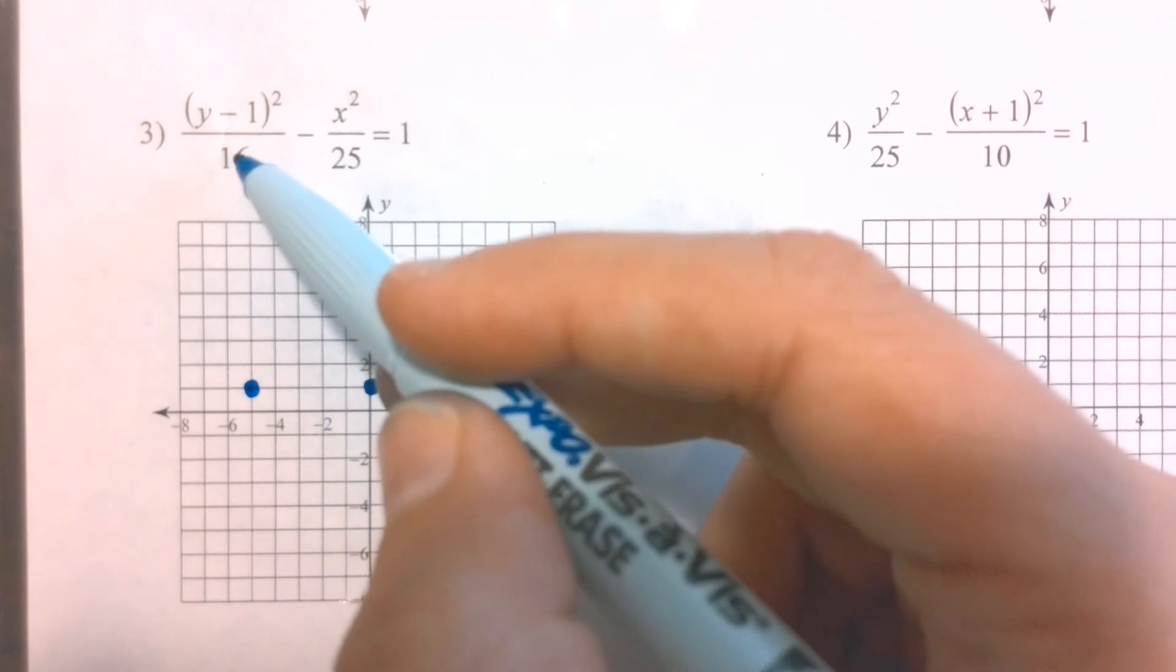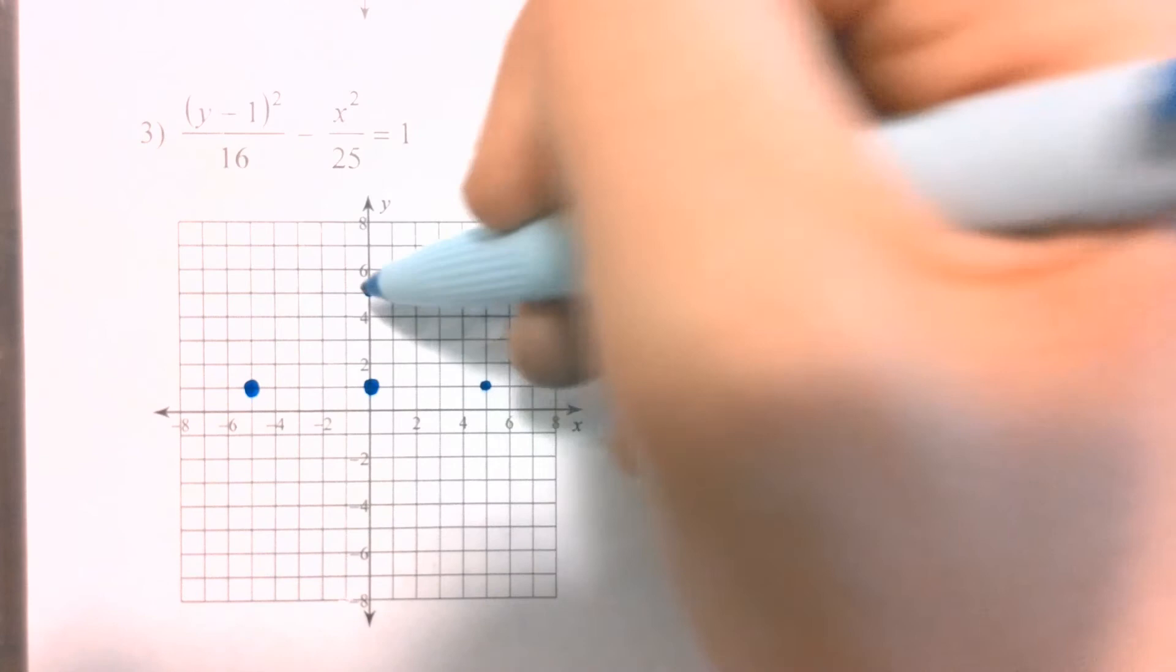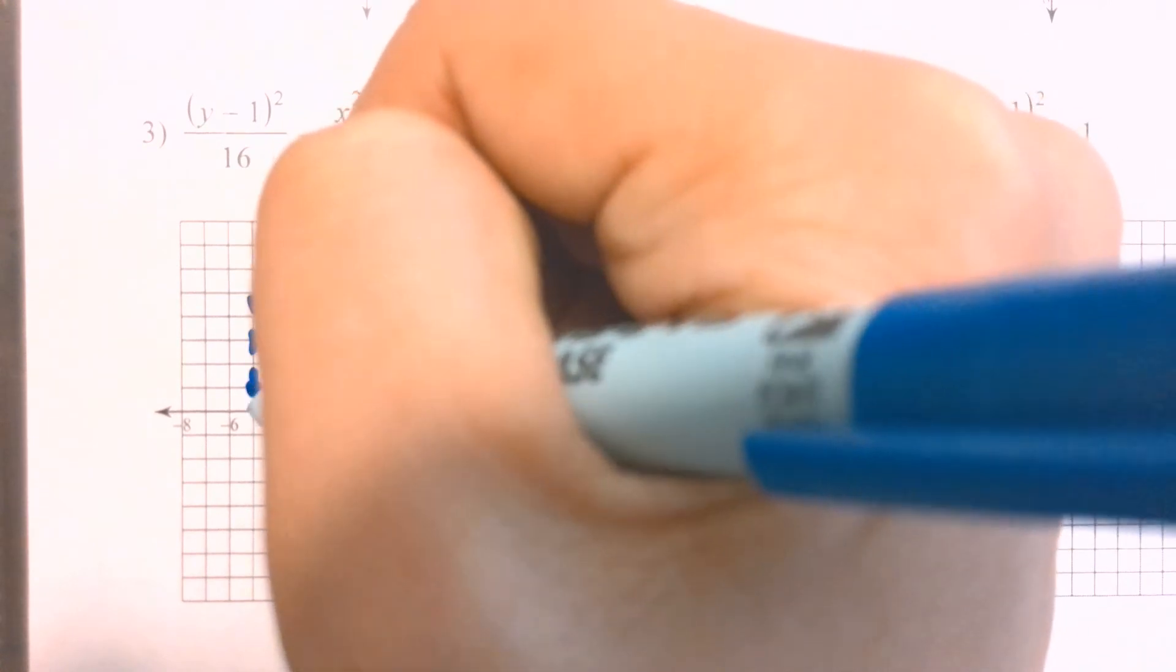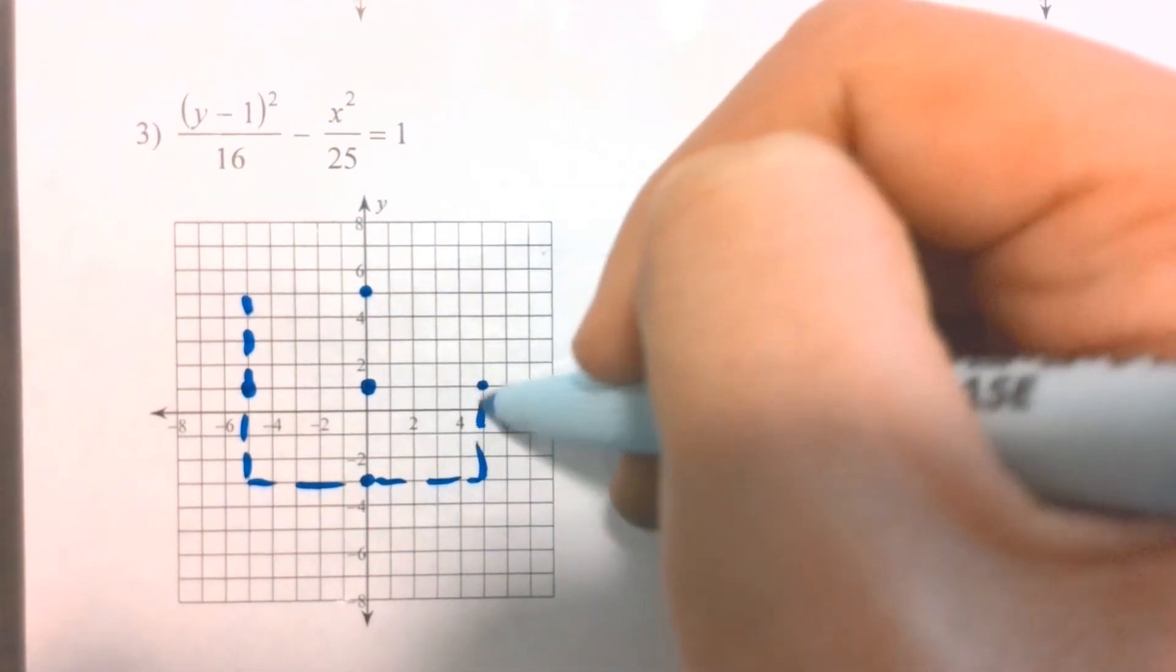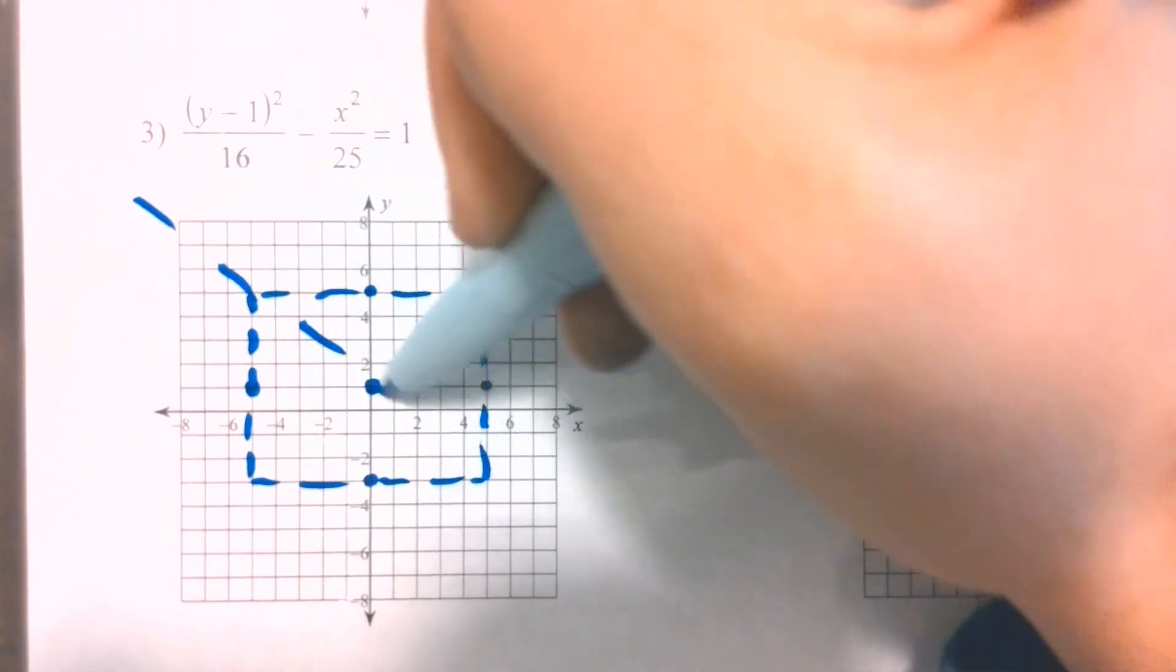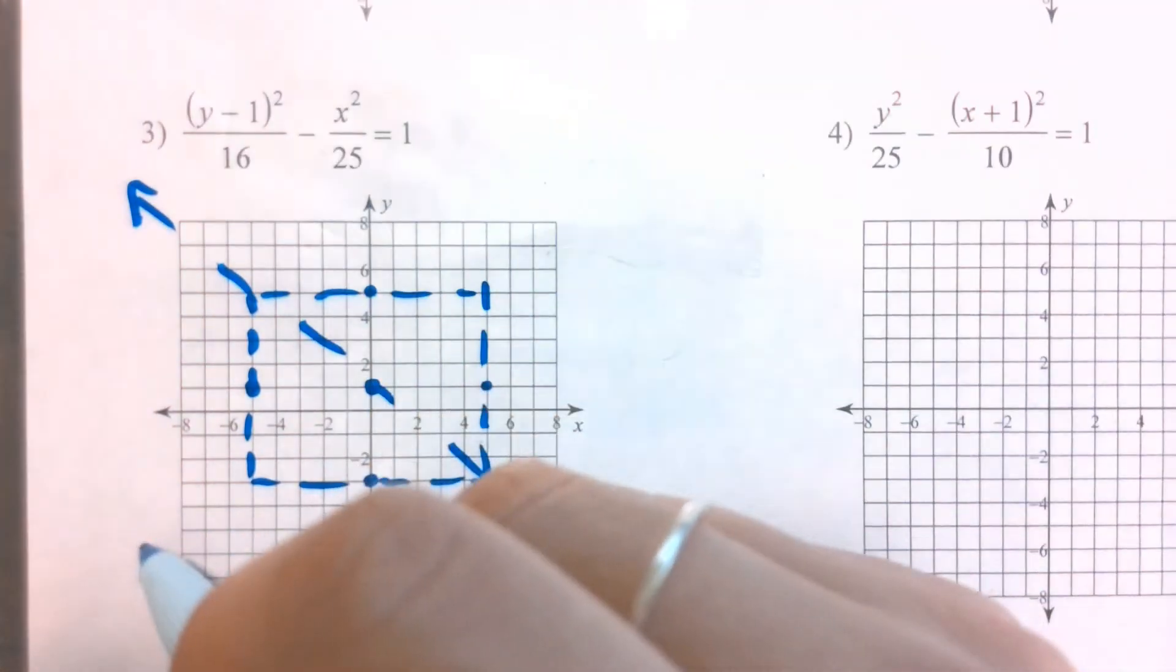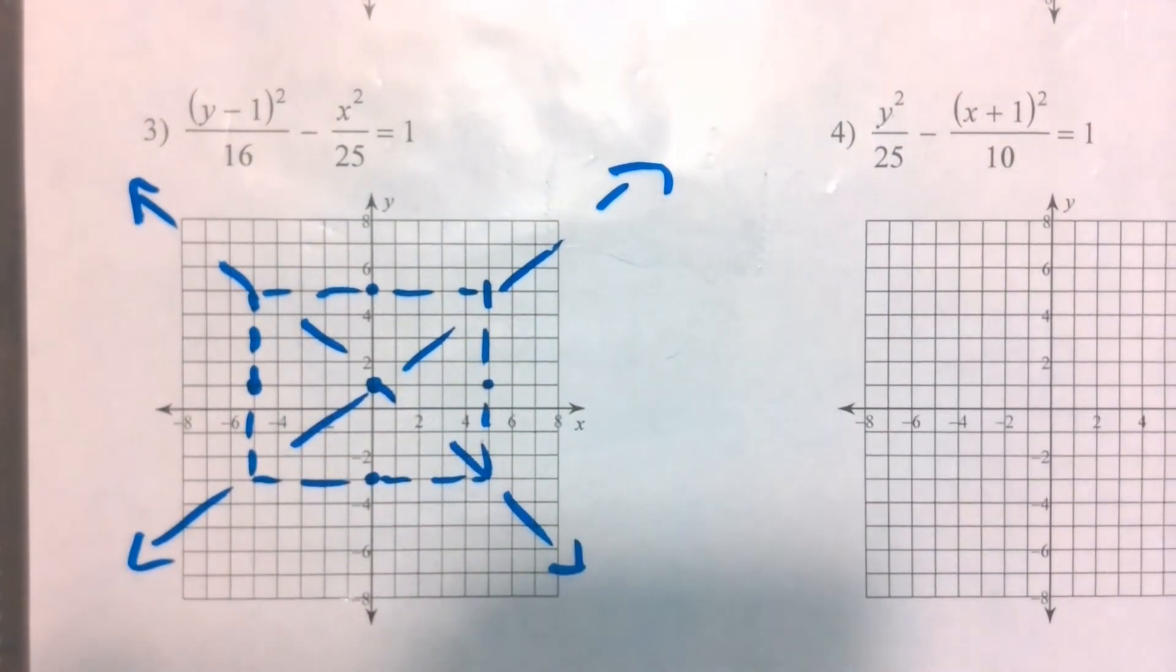Underneath my y value, I have 16. So taking the square root, that tells me I'm going up four and down four. So this one almost is going to look like a square, but not quite. It's still a rectangle. Drawing in my asymptotes as best I can.